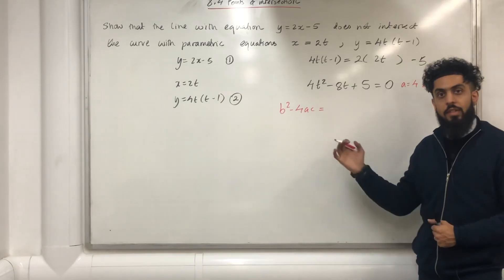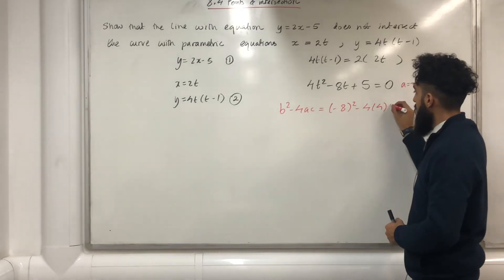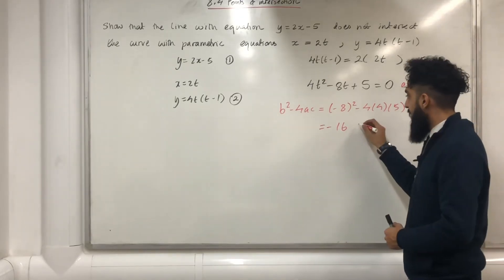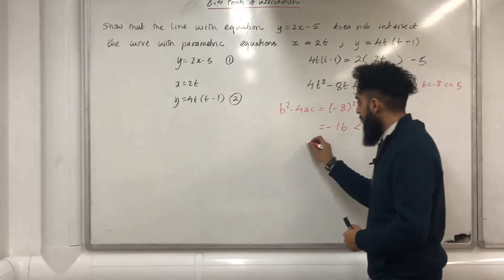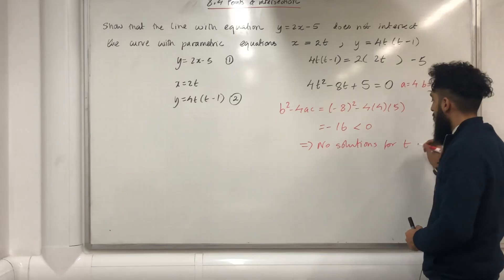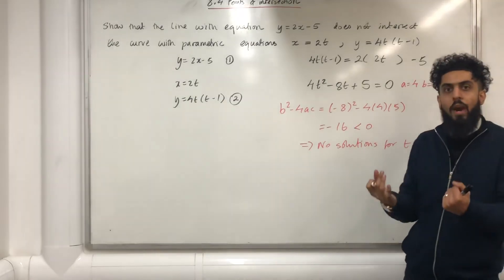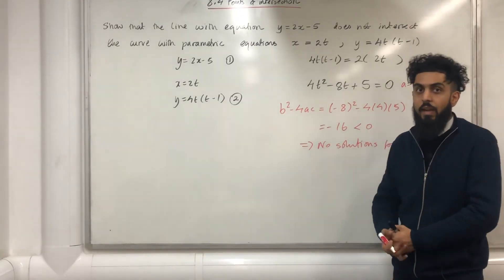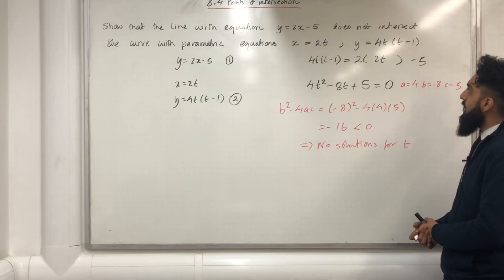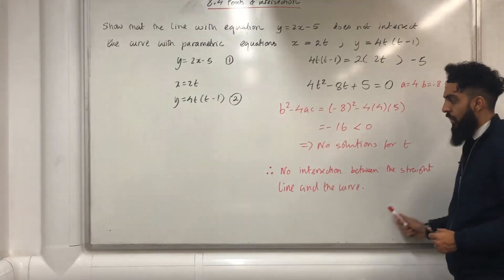Substituting my values of a, b, and c into the discriminant gives me minus 16. Minus 16 is less than 0, which implies that there are no solutions for t for this particular quadratic equation. And if there are no solutions for t, we can't generate x and y values. And if we can't generate x and y values, this means that the straight line y equal 2x minus 5, and the curve x equal 2t, y equal 4t in bracket times t minus 1, do not intersect. Don't forget to write your conclusion. Take care.